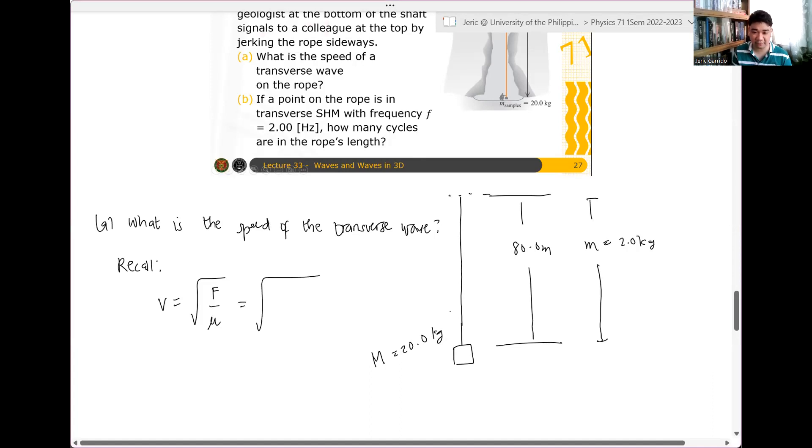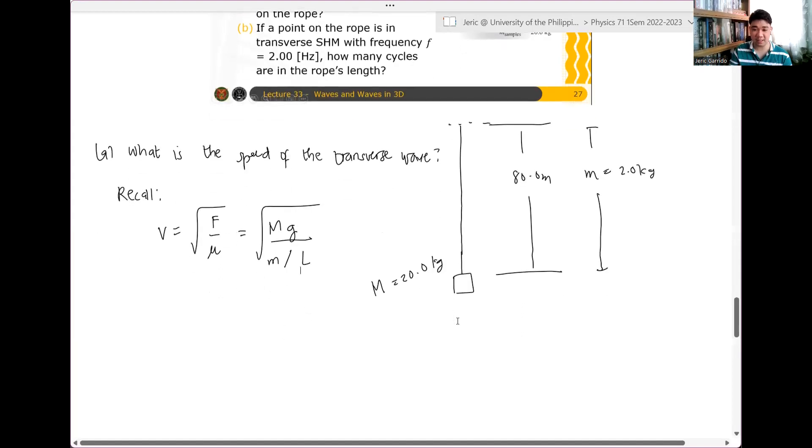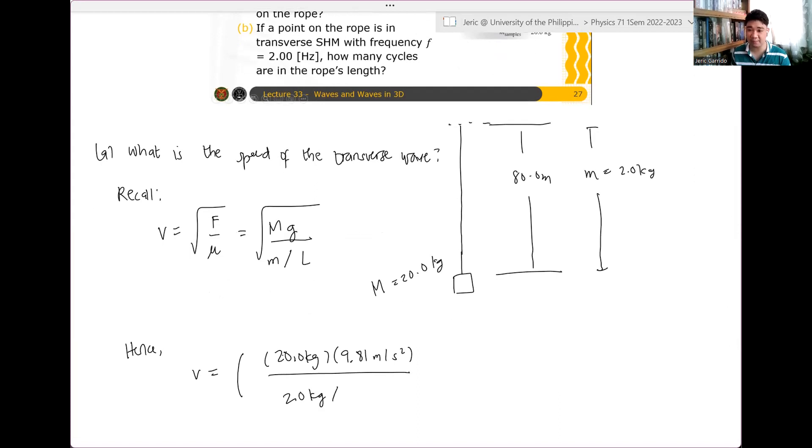I'll just say that this is capital M. So, this is just square root of the mass of the rocks multiplied by acceleration due to gravity G, divided by the mass of the string, small m, divided by the total length of the rope, capital L. So, in this case, hence, the velocity of a wave that will travel on that rope is equal to the mass, which is 20 kilograms, multiplied by 9.81 meters per second squared, divided by the total mass of the rope, which is 2.0 kilograms, divided by the length, which is 80.0 meters.